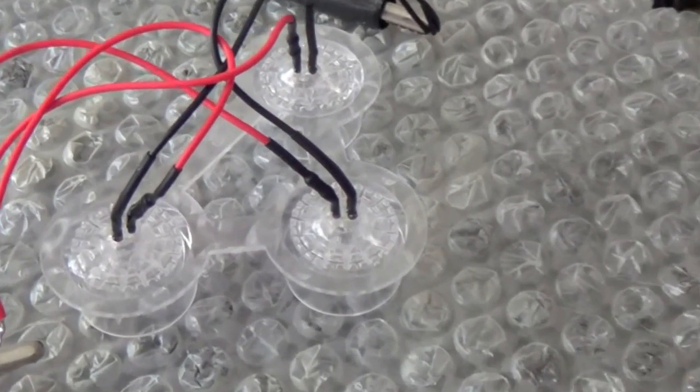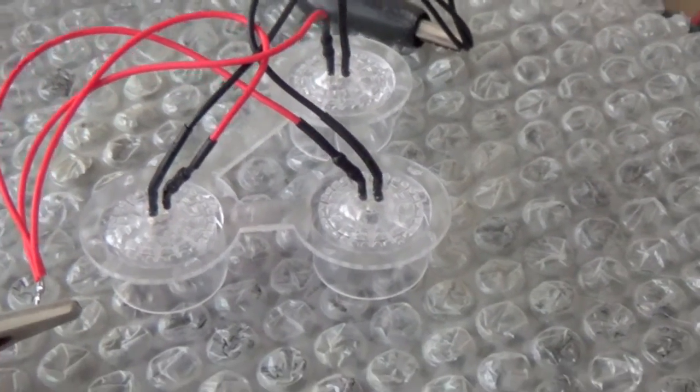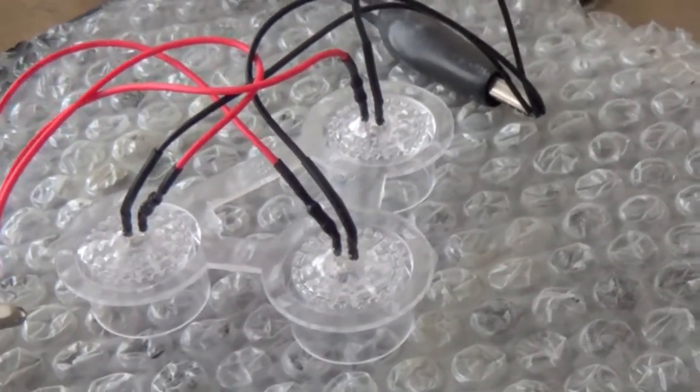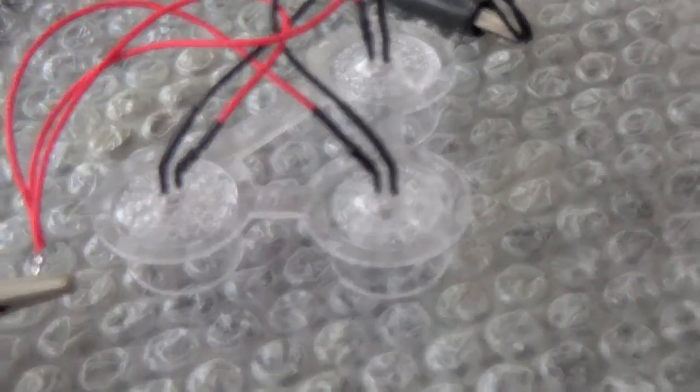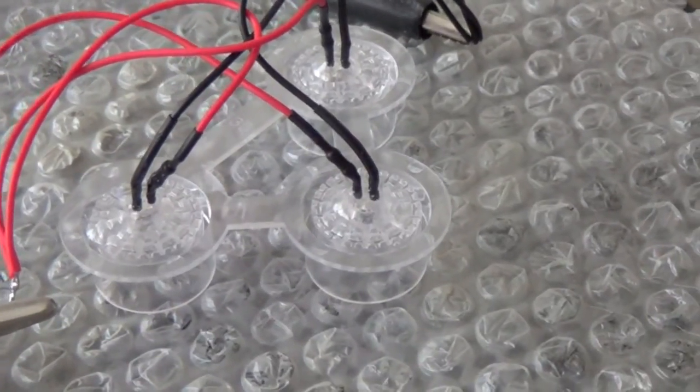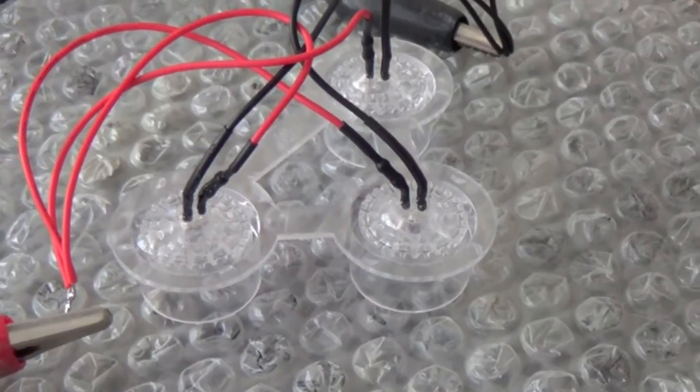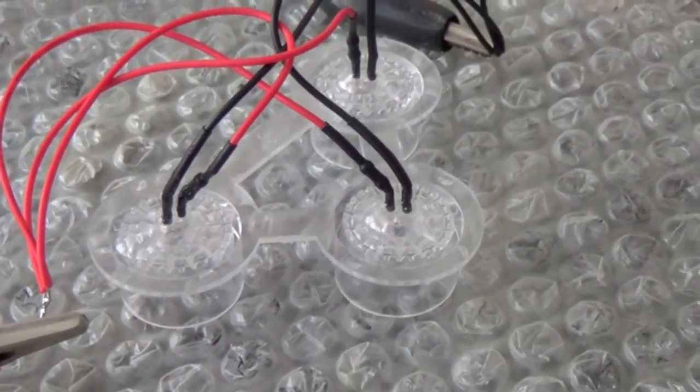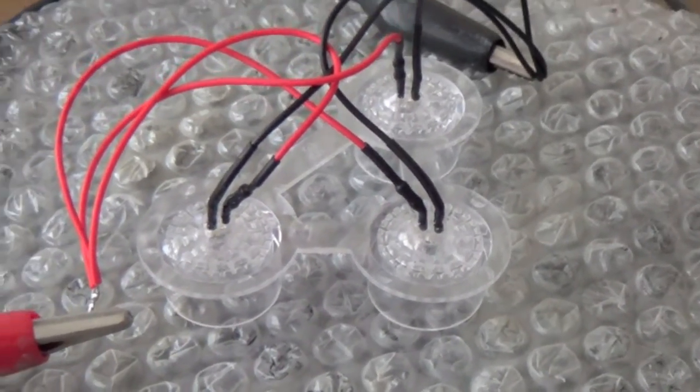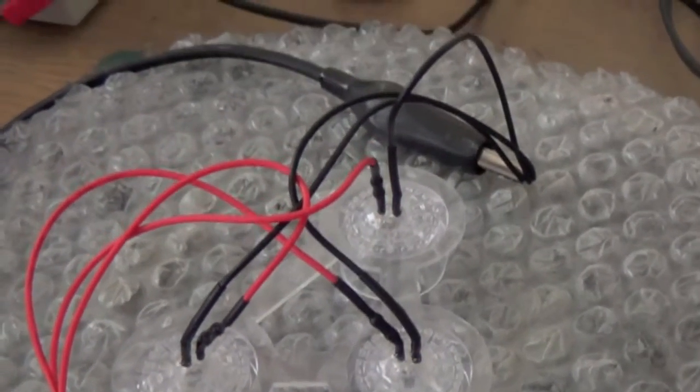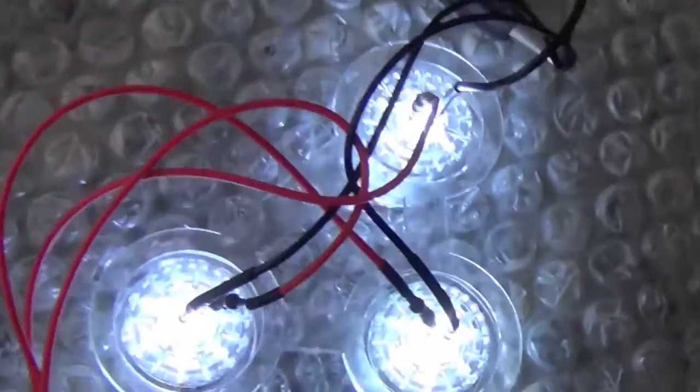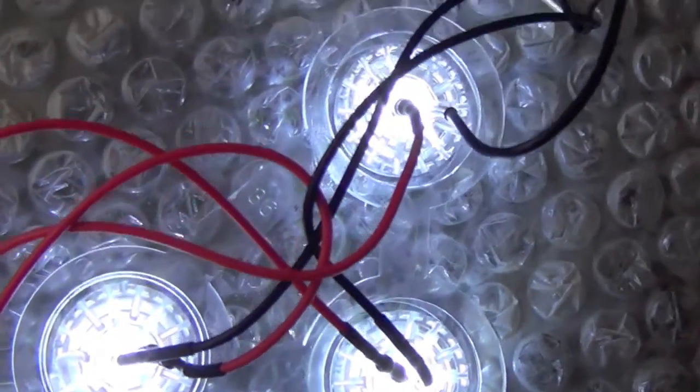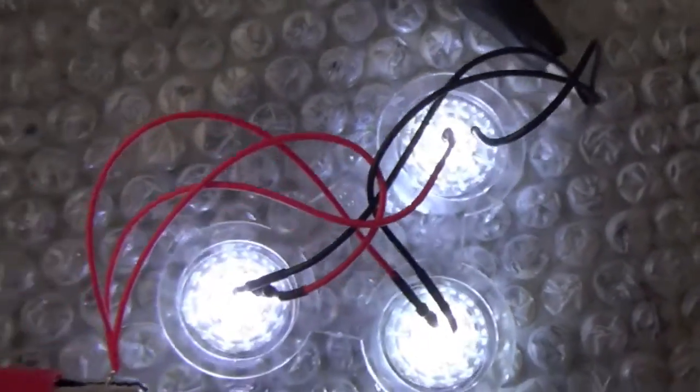OK, the LEDs have now been set hopefully pretty straight into the transparency for the engines. And I've used 5 minute epoxy. It's had about 10 minutes now. Seems to be setting quite nicely. So, quick test. 12 volts and there we go. So we've now got some nice lighty up engines.